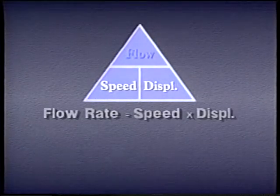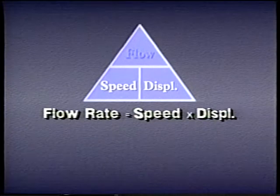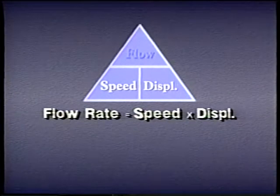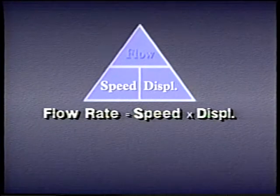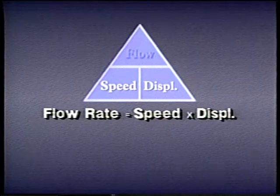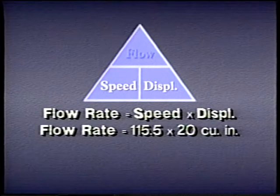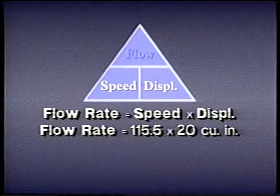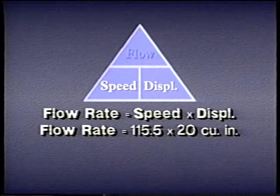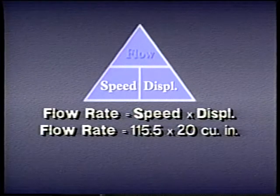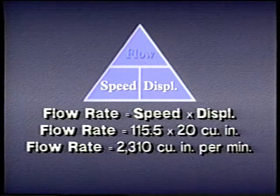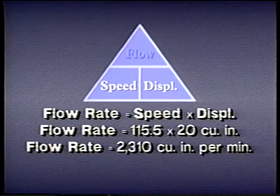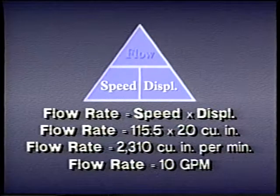We can also calculate the flow which a motor requires to maintain a certain speed if we know the displacement. For example, a 20 cubic inch motor operating at 115.5 RPM will require a flow of 2,310 cubic inches per minute — that's 10 GPM.